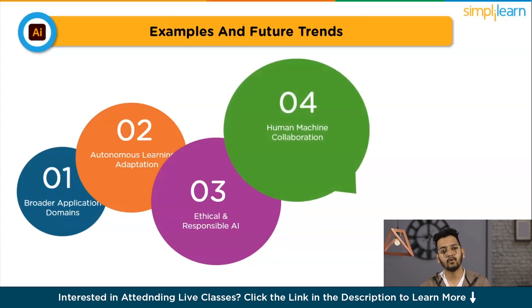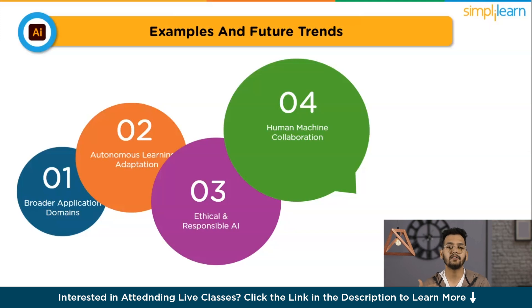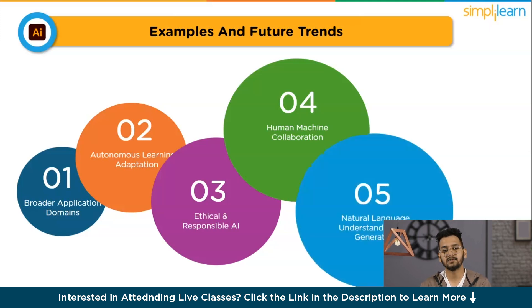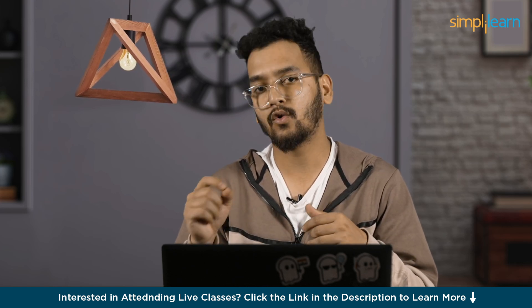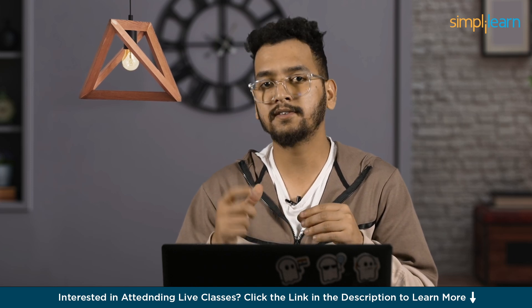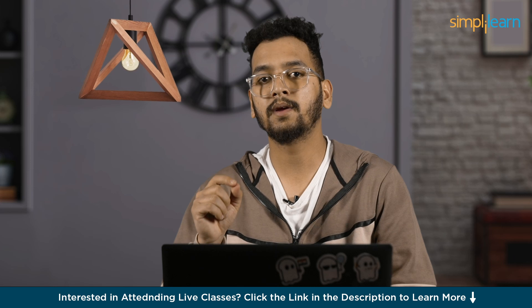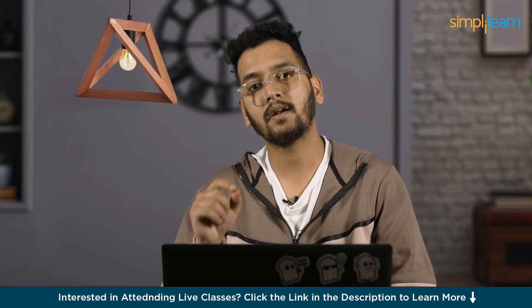The fourth trend is human-machine collaboration. AGI could facilitate seamless collaboration between humans and machines. For instance, in healthcare, AGI might analyze vast amounts of medical data to assist doctors in diagnosing complex diseases, leading to more accurate and timely treatments. The fifth trend is natural language understanding and generation. AGI may achieve remarkable progress in understanding and generating language, leading to advanced language models that comprehend human communication nuances and generate content with creativity and coherence. It is important to note that AGI is still largely theoretical, and realizing these trends depends on overcoming significant technical, ethical, and safety challenges.